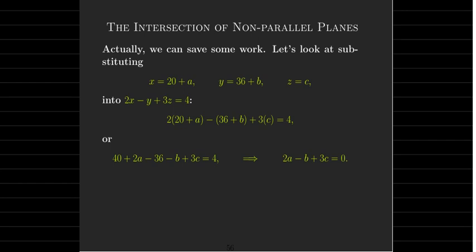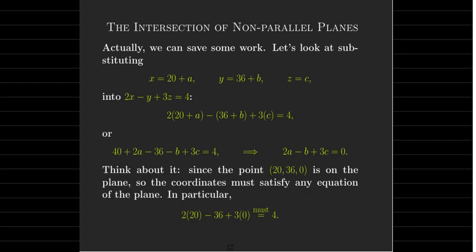And if we think about it, that should make perfect sense because where did these numbers 20, 36, and then there's a 0 here that we didn't write,